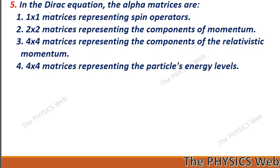Next: in the Dirac equation, the alpha matrices are 4×4 matrices representing the components of the relativistic momentum. So, three is your correct option.